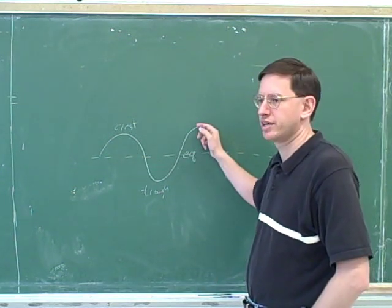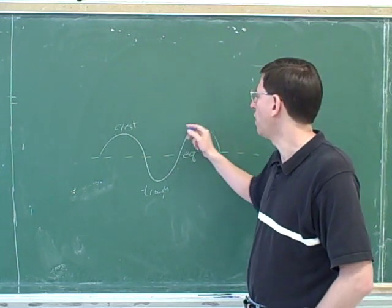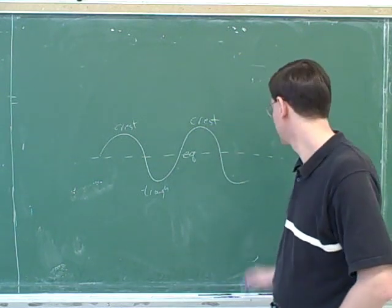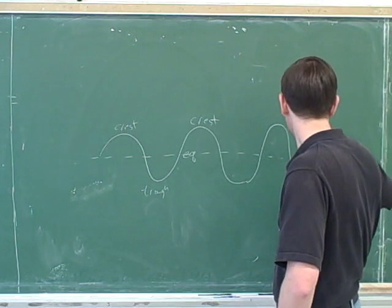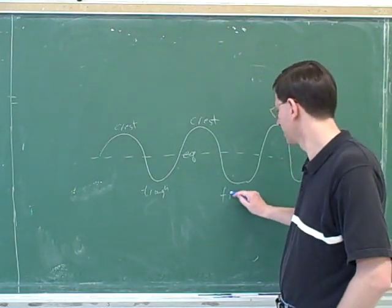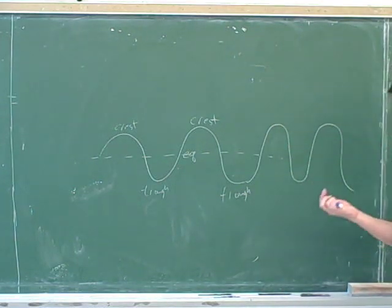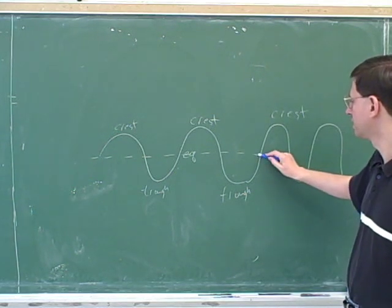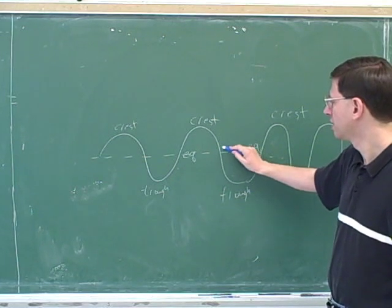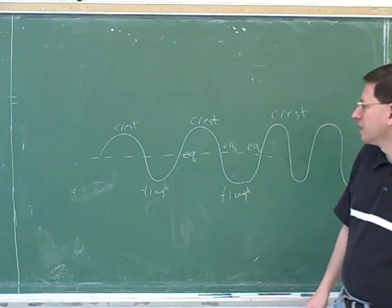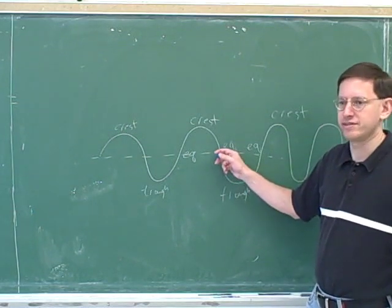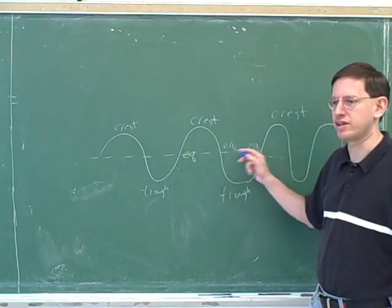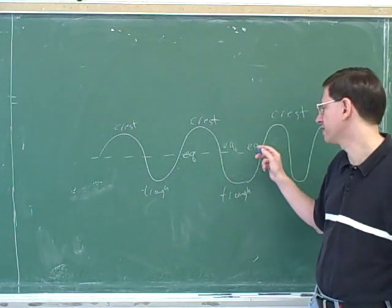So, what would we call this point? Now, all the points that are on the top are the crests. Okay. So, what would this point be? The trough. How about here? Crest. How about here? Equilibrium. Or here? Equilibrium. Notice that there's two different types of equilibrium. There's equilibrium when you're going down towards the trough, and there's equilibrium when you're going up towards the crest.